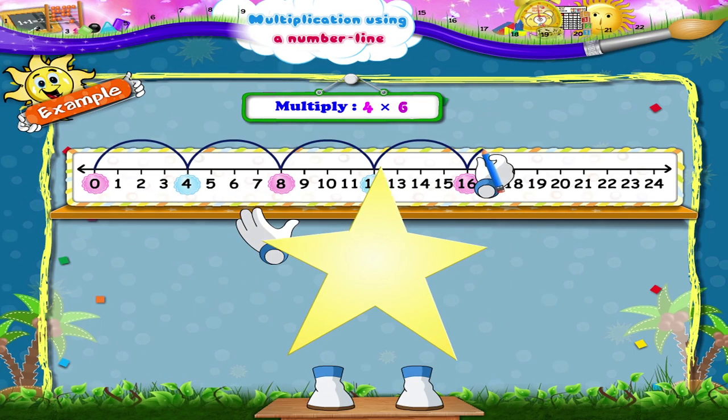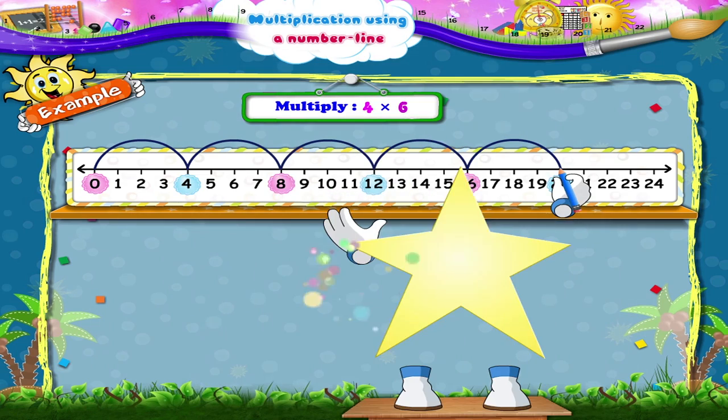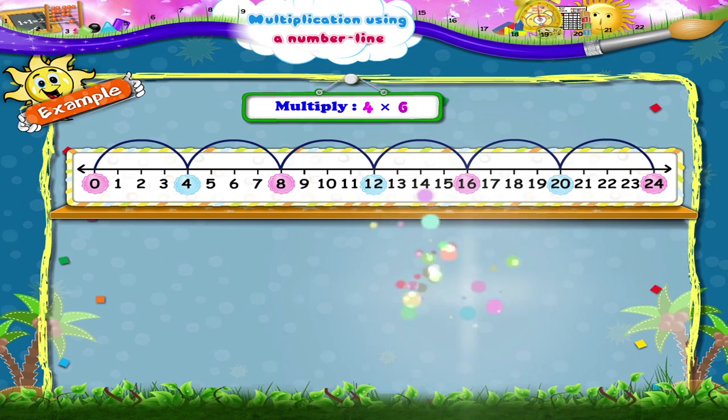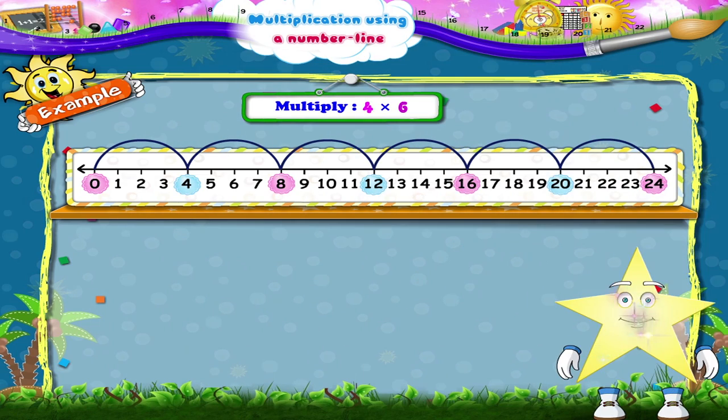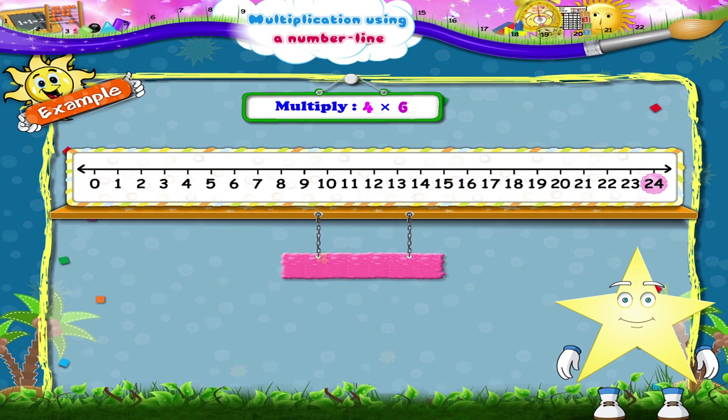How many such numbers should we select? Yes, six. We reach the number 24. So four into six is equal to 24.